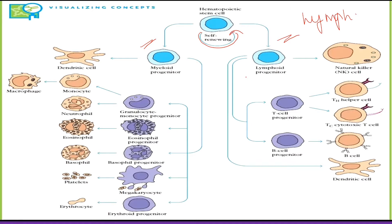The myeloid progenitor generates: dendritic cells, granulocyte-monocyte progenitor, eosinophil progenitor, basophil progenitor, megakaryocyte, and erythroid progenitor. The granulocyte-monocyte progenitor can differentiate into either a neutrophil or a monocyte.